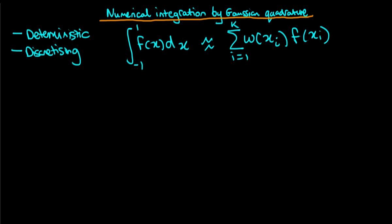On the right we just have a weighted sum of the function values with the weights given at the particular x values. I haven't specified what these weights are nor what the xi are — and indeed that's what we look for in Gaussian quadrature: optimal choices of the weights and the x's to make this approximation as good as possible.